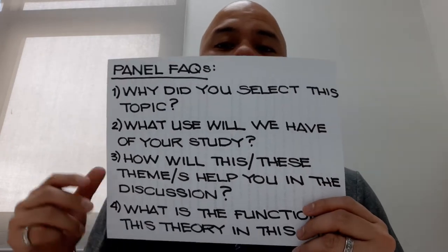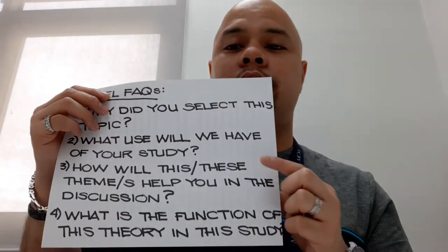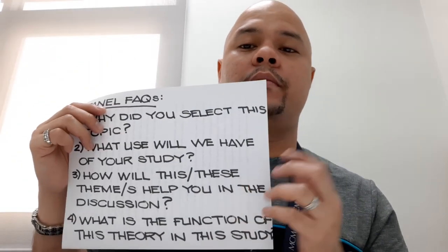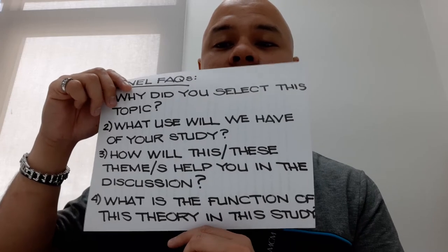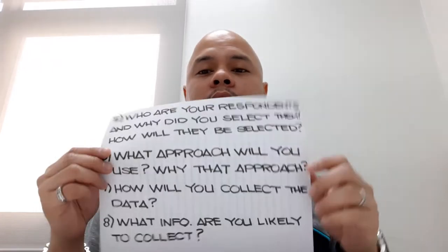Number three: how will this or these themes help you in the discussion in your succeeding chapters? This one is for chapter two — your themes or your thematic approach. Number four: what is the function of this theory in this study? Sometimes proponents include theories that they do not intend to use in the discussion — the theories are just there for the sake of being able to place theories, which frankly sometimes might not be relevant to the study at all.